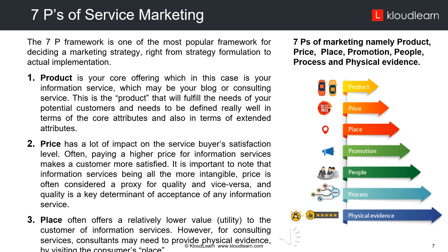The 7 P's of service marketing: the 7P framework is one of the most popular frameworks for deciding a marketing strategy, right from strategy formulation to actual implementation. Number one, product: the product is the core offering, which in this case may be an information service such as a blog or consulting service. This is the product that will fulfill the needs of potential customers and needs to be defined well in terms of core attributes as well as extended attributes. Number two, price.